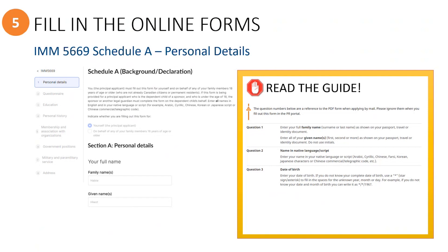The opening paragraph for this online form may seem confusing, since it mentions that it must be the principal applicant filling in the form for themselves and on behalf of their family members who are over 18 years old. What this means is that the principal applicant will be responsible for providing the information required to complete each person's Schedule A form for dependents who are over 18. There is only going to be one signature required for all of the online forms — it will be the principal applicant who signs the declaration and consent form on behalf of their dependents.